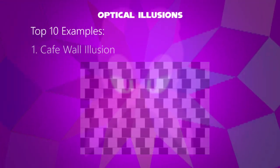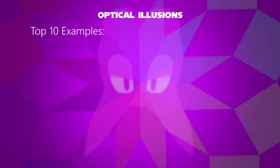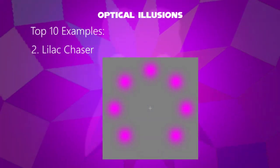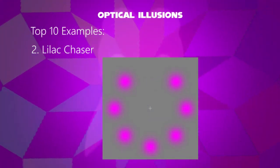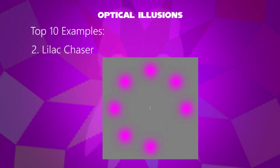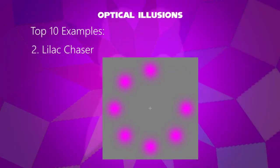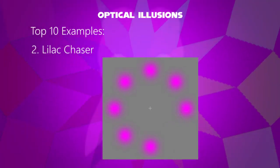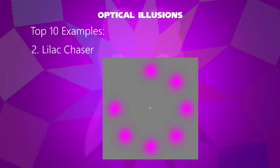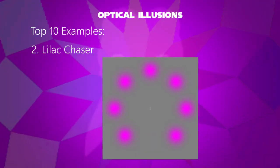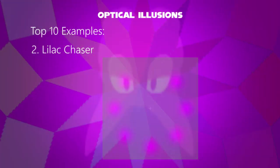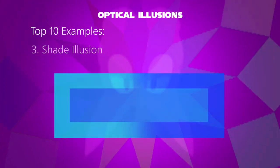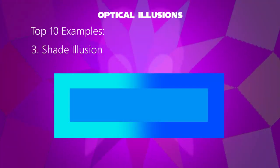Another example: the lilac chaser illusion with a gray background and seven magenta dots, except for one remaining dot. Try focusing on the center — it looks like a green dot appears slowly. This happens as each dot disappears frame by frame and the next one appears.